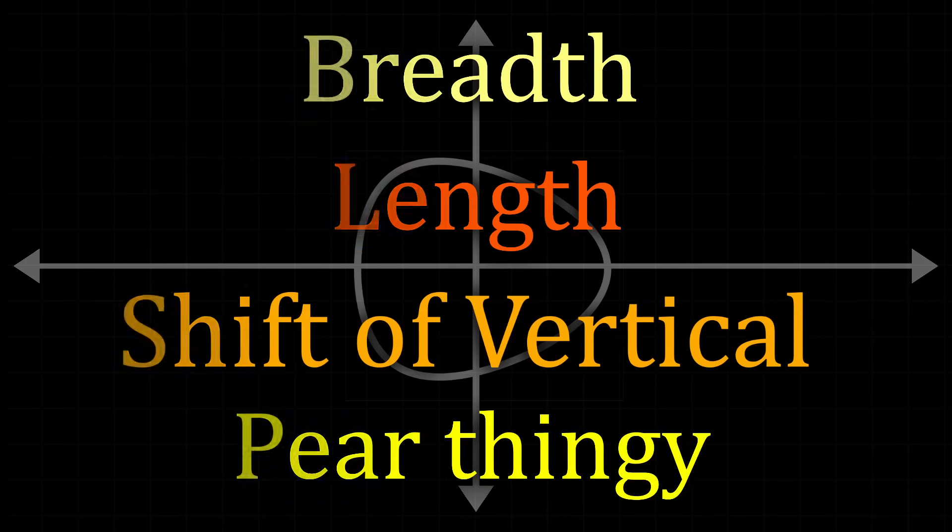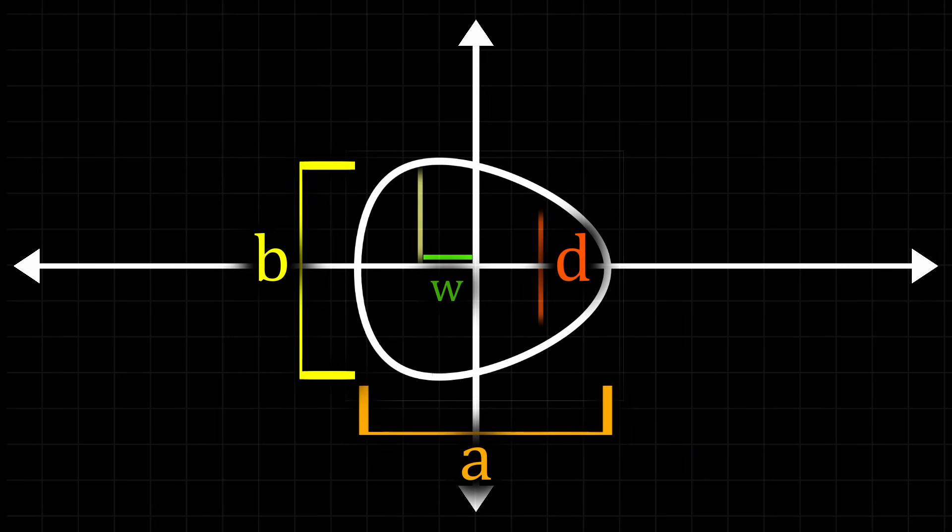If you want to know concretely what each variable represents, there does exist this cool little graph featuring all four, the length, the breath, weighting, and pear shapeness represented by d, which actually just stands for the diameter at one quarter of the egg length, because it's like literally the diameter at one quarter of the egg length.